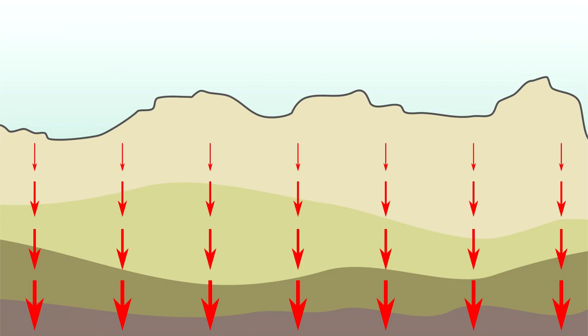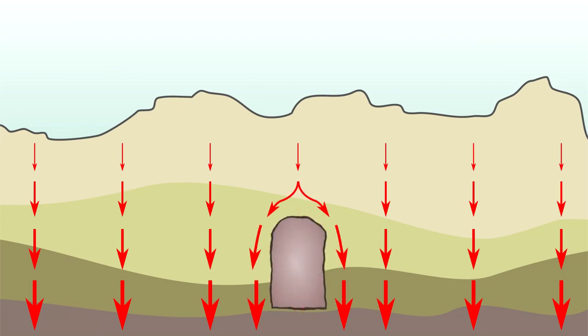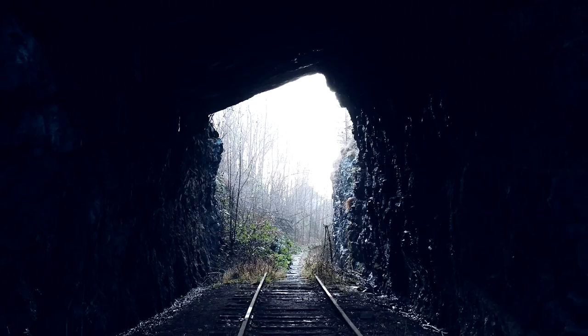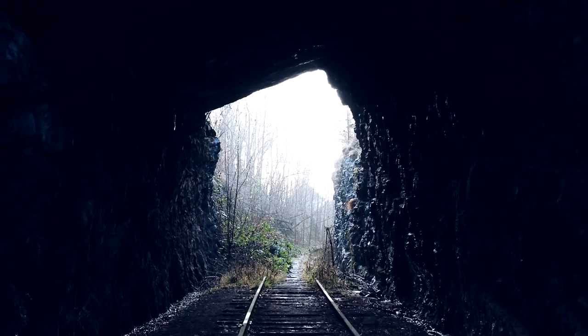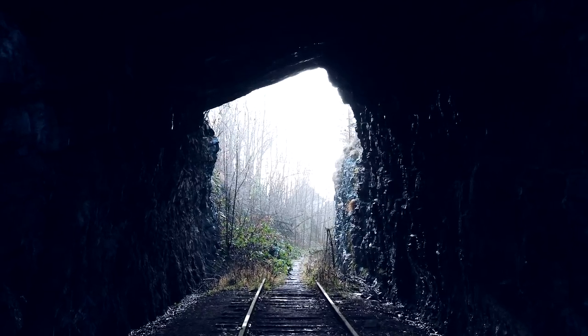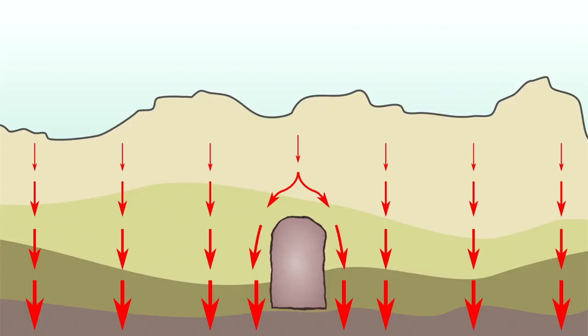This pressure compresses the material in the subsurface more and more the further down you go. Building a horizontal passageway, or a tunnel, through this material interrupts the flow of these compressive forces. Just like if you remove a column from a building, excavating a tunnel takes away the support from the material above. Where you once had compression throughout the subsurface, now you've created a zone of tensile stress, where the material above the tunnel is trying to pull away from itself.